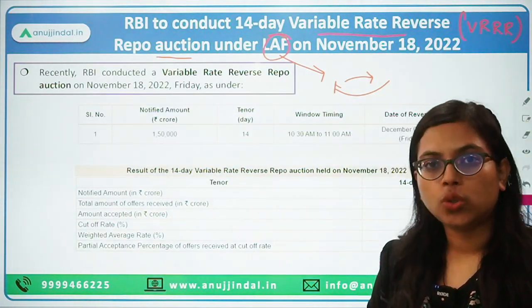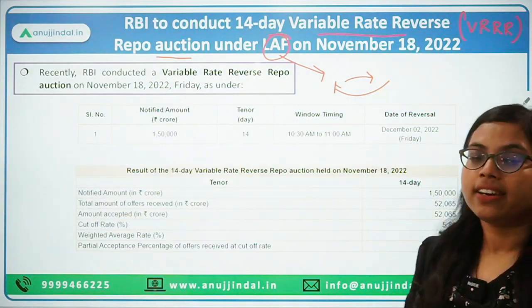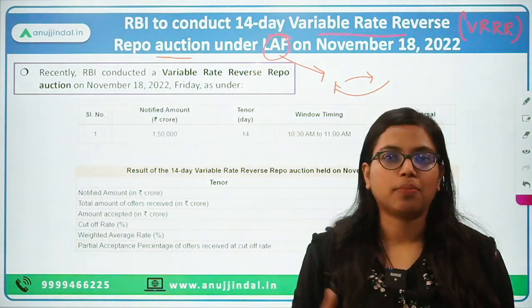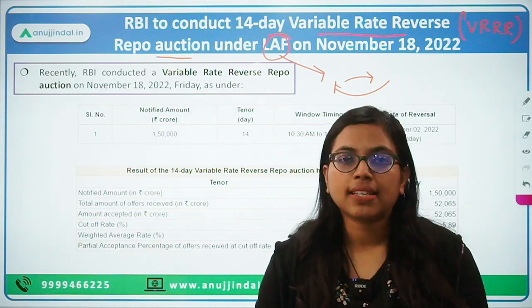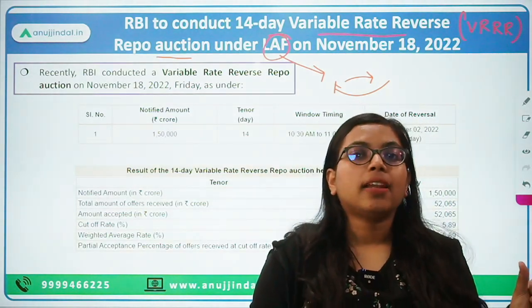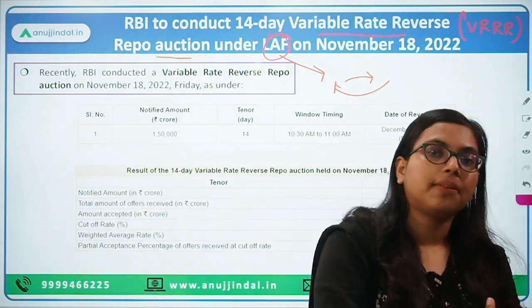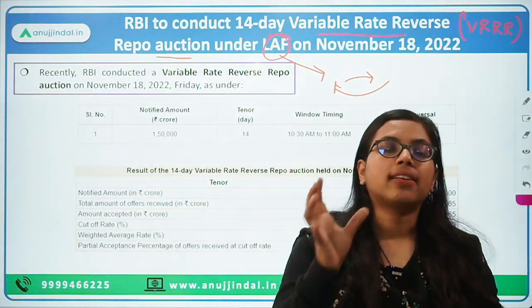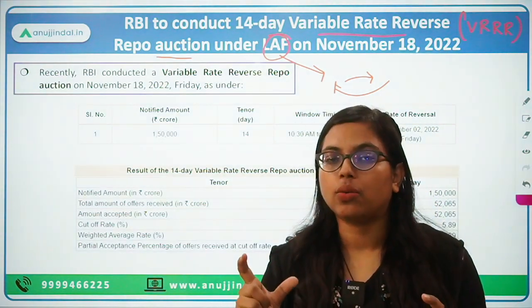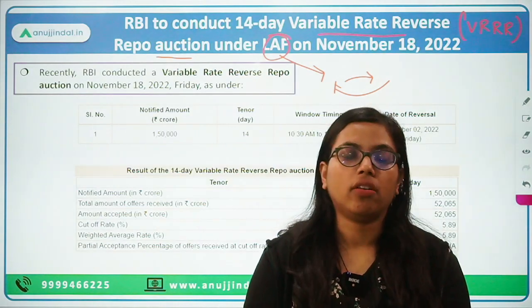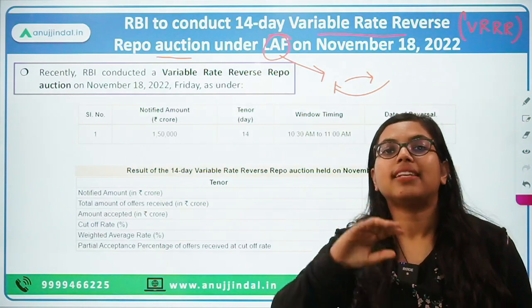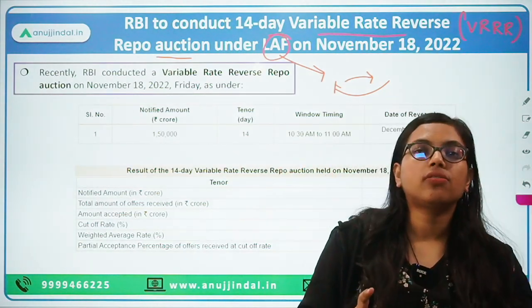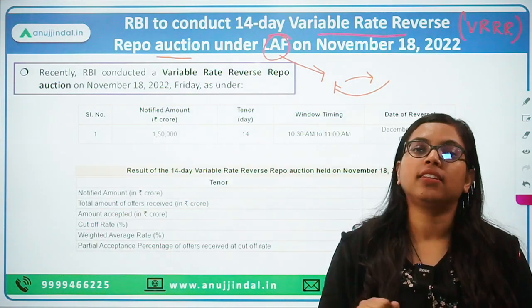Two very important tools used here are repo and reverse repo rate. Since the term repo is clear to all of you, let's talk about the reverse repo rate. This is basically the rate at which commercial banks can park their excess or surplus funds with RBI, and against this, RBI will be giving these commercial banks certain collateral. In other words, the reverse repo rate is the rate at which the central bank, that is RBI, borrows from commercial banks against certain collateral security.